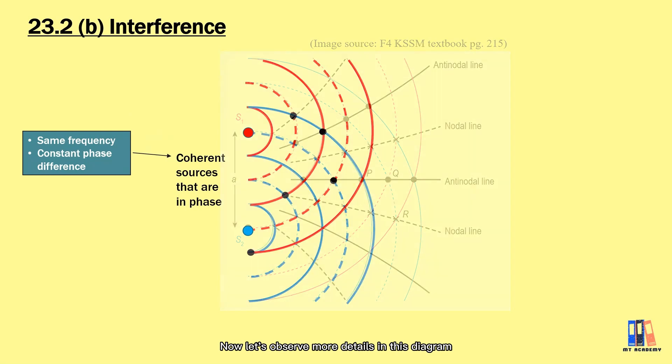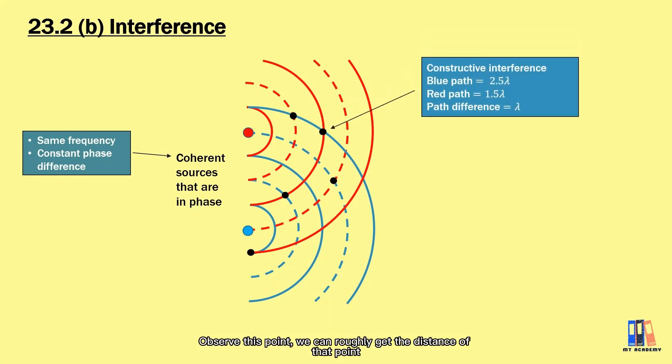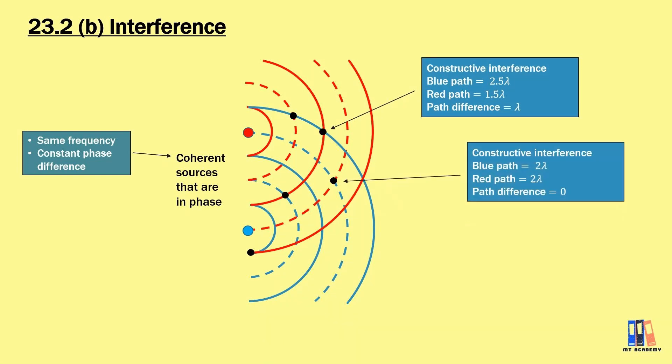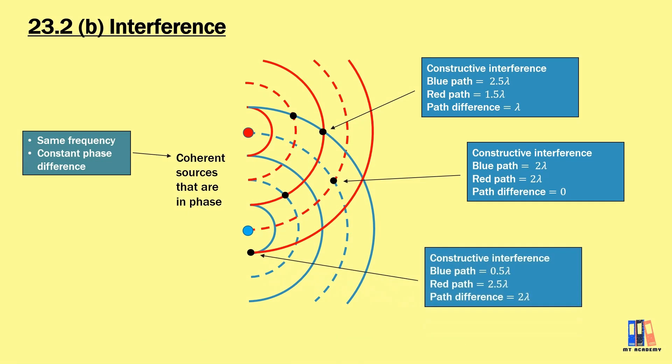Let us observe more details in this diagram. We're going to quantify the condition of having constructive or destructive interference. We learned that superposition of two waves produces constructive interference. Observe this point. We can roughly get the distance of that point from each source. The blue wave is 2.5 times the wavelength away, the red one is 1.5 times the wavelength. The path difference equals one wavelength. Both blue and red at two wavelengths away from the source gives path difference of zero. All of these points are where constructive interference occurs.